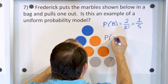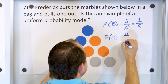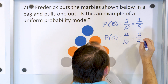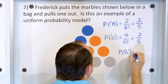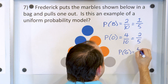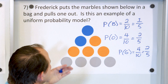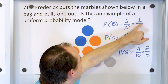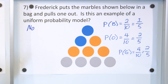The probability of pulling out a gray marble is also four out of ten, which works out to two-fifths. So is this a uniform probability model? No, it's not, because the outcomes have different probabilities. Orange and gray are the same at two-fifths, but the probability of getting a blue marble is different at one-fifth, so it's non-uniform. This is not a uniform probability model — it is called non-uniform.